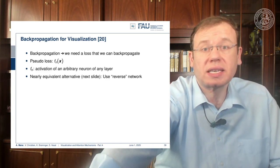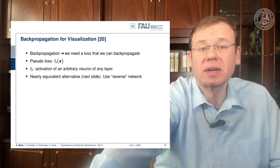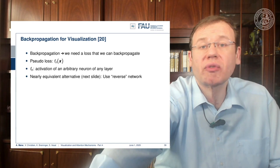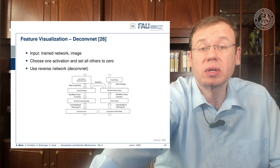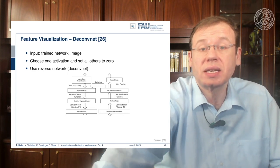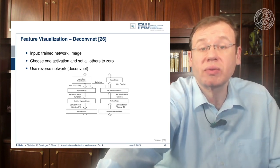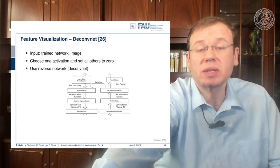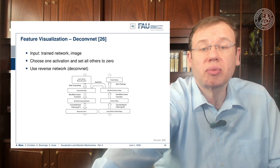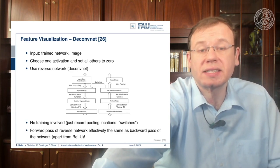Instead of using back propagation, you can build a nearly equivalent alternative which uses a kind of reverse network — this is the DeconvNet from reference 26. The input is the trained network and some image, then you choose one activation and set all of the other activations to zero. You then build a reverse network containing the same layers but in reverse sequence with so-called unpooling steps. With these unpooling steps and the reverse computation, you can also produce a kind of gradient estimate.